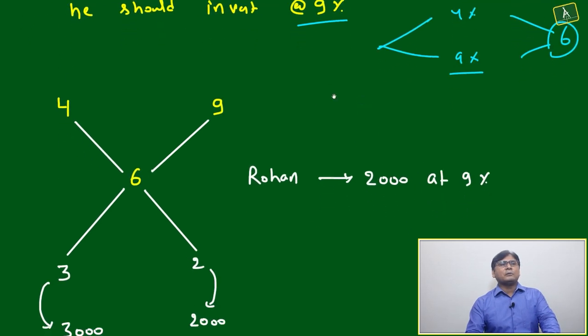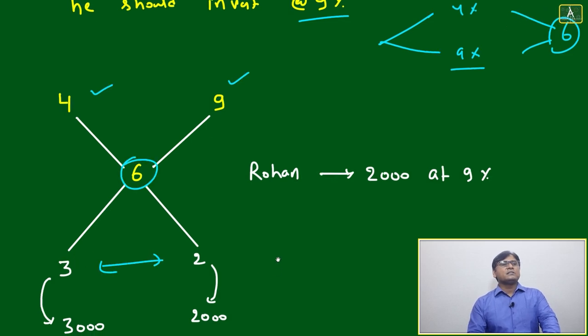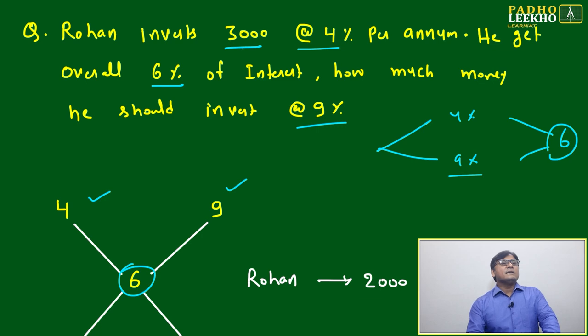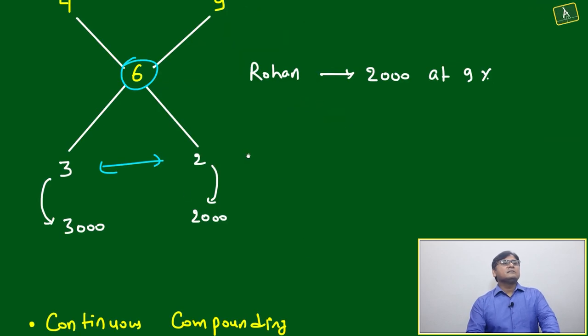Looking wise, we can apply the allegation. There is no problem here. Four, nine - overall you are getting six. Take the difference - three ratio two.